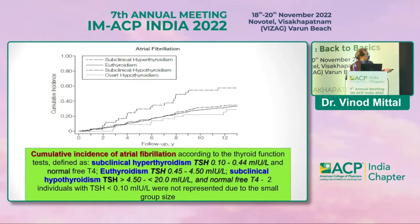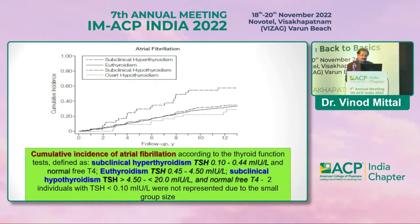This slide shows the overall cumulative incidence of atrial fibrillation. It also shows how we classify thyroid status by TSH: subclinical hyperthyroidism when TSH is between 0.1 and 0.44, euthyroid when between 0.45 and 4.5, and clinical hypothyroidism when TSH is more than 4.5 and less than 20 — which guides treatment decisions.